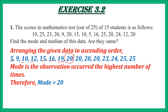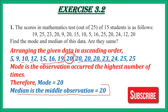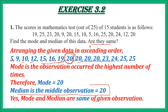This is the middle-most value — there are 7 values on each side, so this is the median. Median is the middle observation and here it is 20. The question also asked 'are they same?' — Yes, mode and median are both 20, so mode and median are the same for this data. Let us move to the next question.